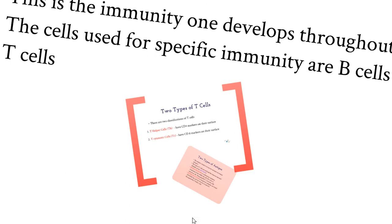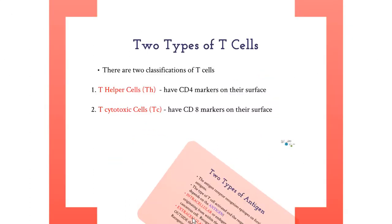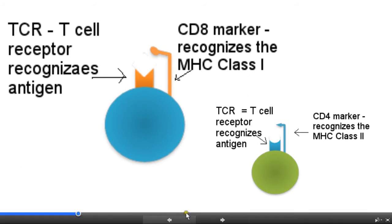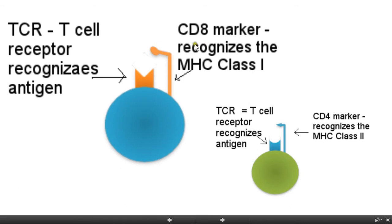In this video, we will review the two types of T cells: T helper and T cytotoxic cells. Each type of T cell plays a unique role in the immune response and can be distinguished by their surface markers. All T cells have two distinct proteins on their surfaces. The first is the TCR, the T cell receptor, which is the antigen receptor, and each T cell has a unique TCR. The second protein is a cluster of differentiation marker, known as a CD marker. T cytotoxic cells have a CD8 marker and T helper cells have a CD4 marker.